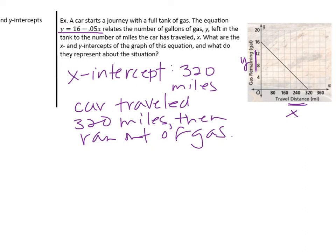Now the y-intercept is all the way up at 16. Notice 16 is in the equation. That would be the y-intercept. The slope would be negative 0.5. The label for the y-intercept is gallons. In the directions, it says the car starts with a full tank of gas.